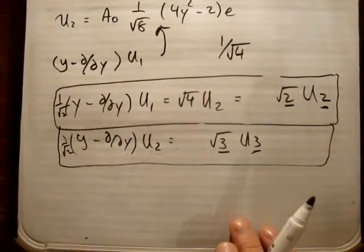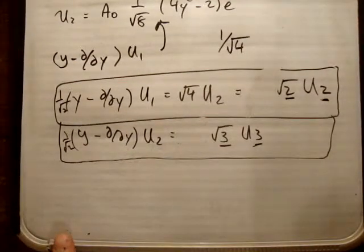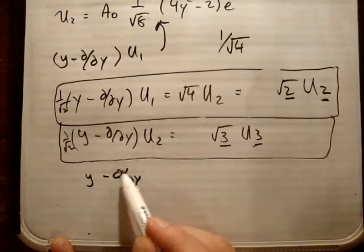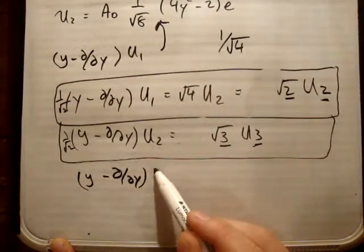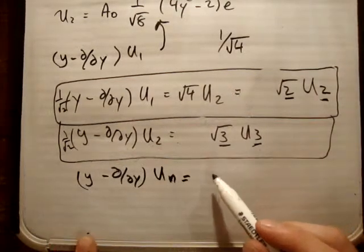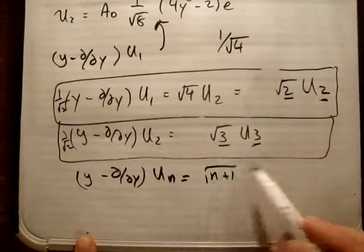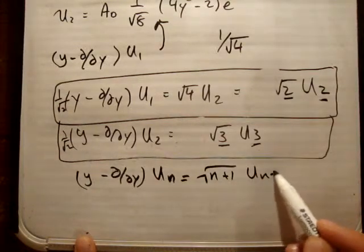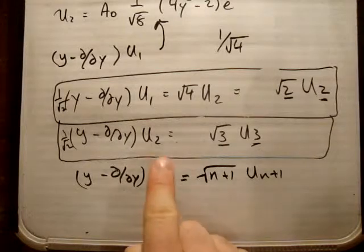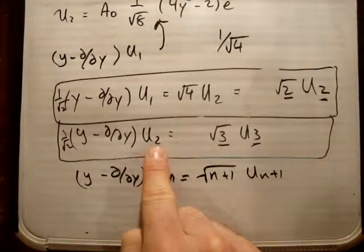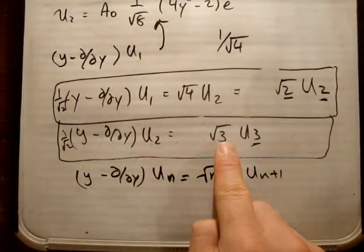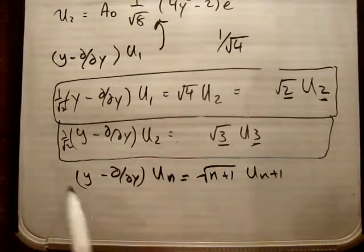So what we can say is as follows. We can say that we have Y minus DDY acting on UN, UN is equal to N plus 1 rooted UN plus 1. Okay? That's, I suppose, looking at it as a raising operator. Because look, we went from UN, we went from U2 to U2 plus 1, and we multiplied it by 2 plus 1, which is 3. Okay?